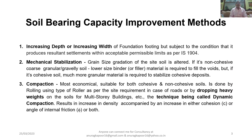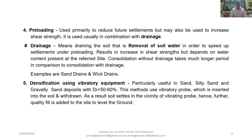Method 3 is compaction — the most economical method. It is suitable for both cohesive and non-cohesive soils. It is done by rolling, using a pneumatic roller or any other type of roller as per site requirements in the case of roads, or by dropping heavy weights on the soil for multi-story buildings. This dropping of heavy weights technique is called dynamic compaction, which results in increased density accompanied by an increase in either cohesion, angle of internal friction, or both.